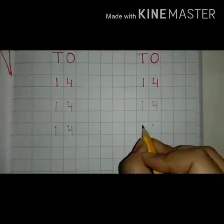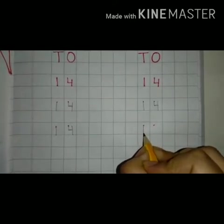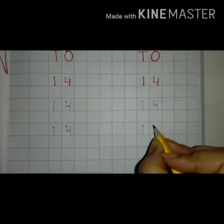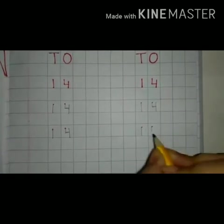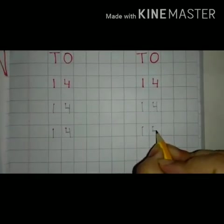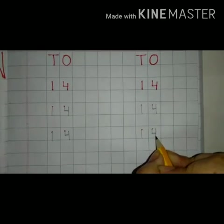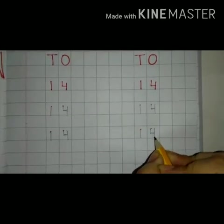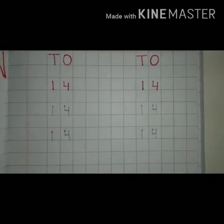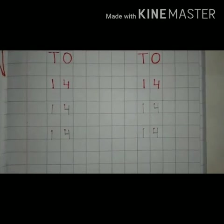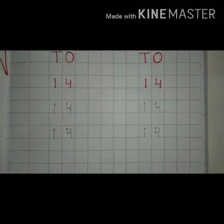Write 1 here. That is standing line from top to bottom. Now standing line from top to middle. Now slipping line. Then standing line from top to bottom. 1, 4, 14. This is the way we have to write 1, 4, 14.